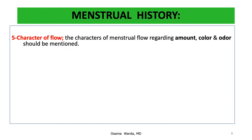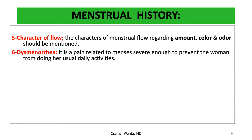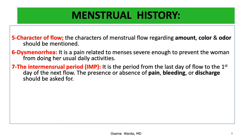The character of the flow is asked for, regarding amount, color, and odor. Dysmenorrhea is asked for — whether present or not — defined as pain related to menses severe enough to incapacitate or prevent the woman from her usual daily activities. The intermenstrual period is the period from the last day of menstrual flow to the first day of the next flow; in this period we ask about pain, bleeding, or discharge.